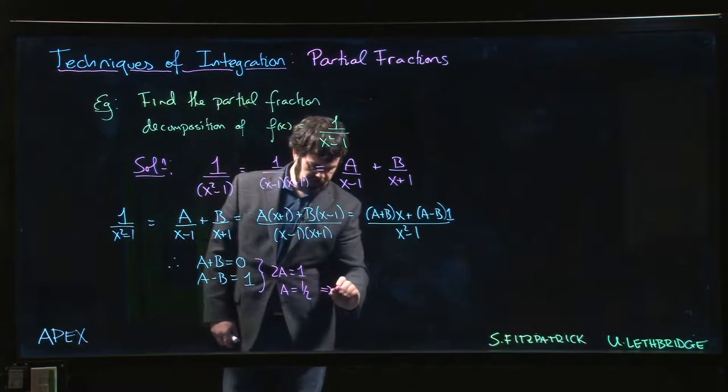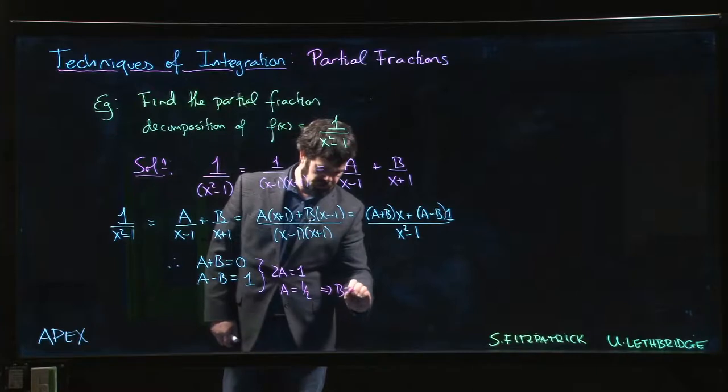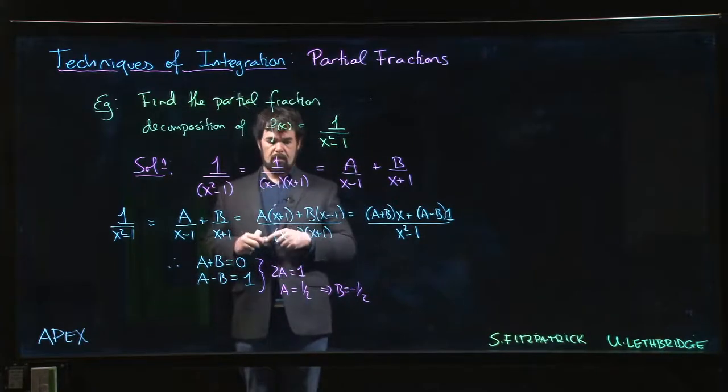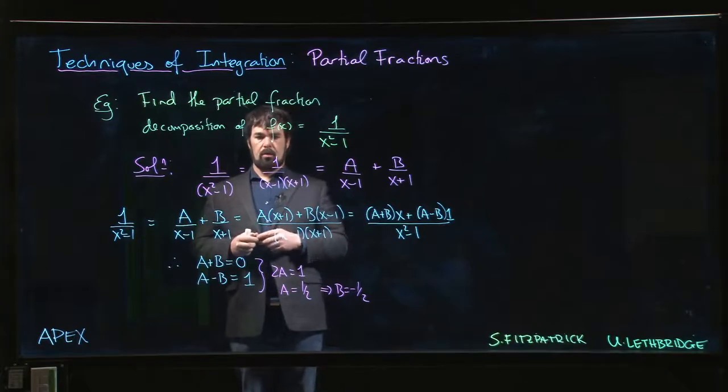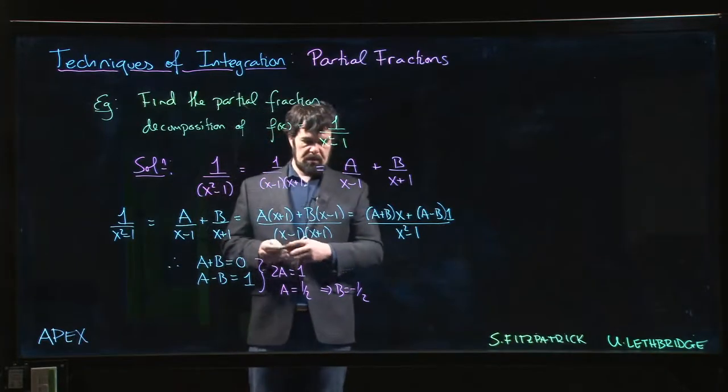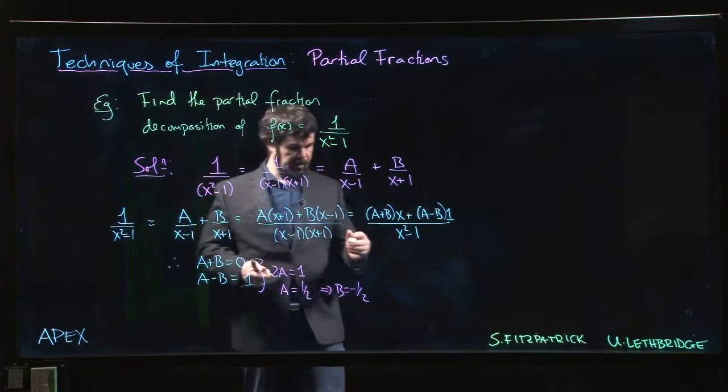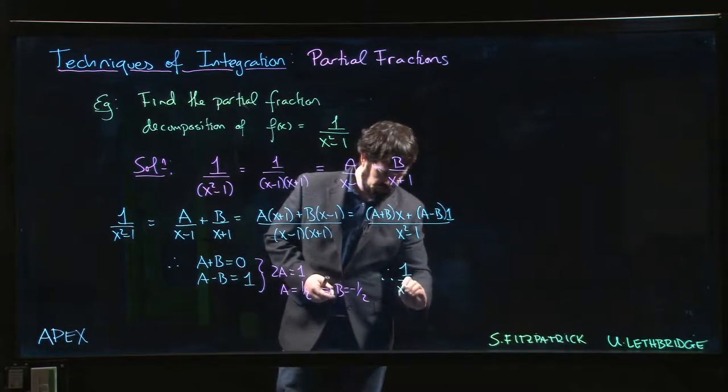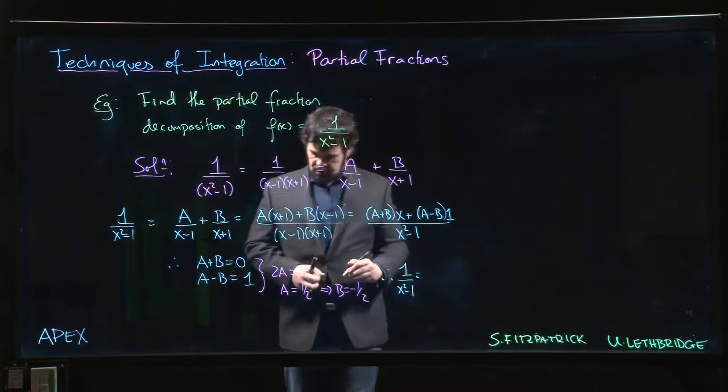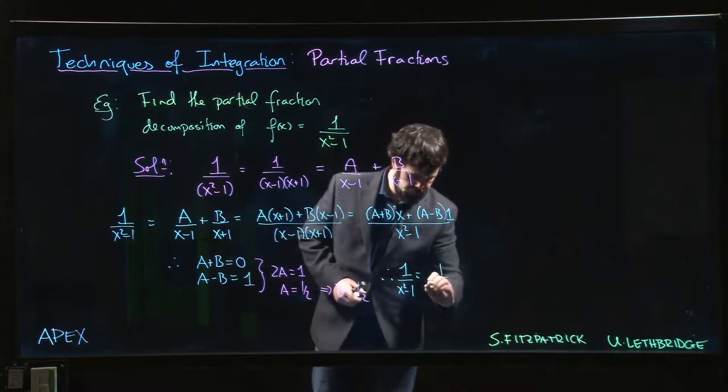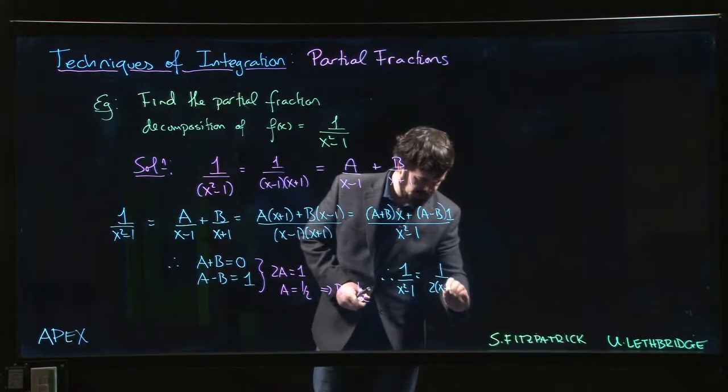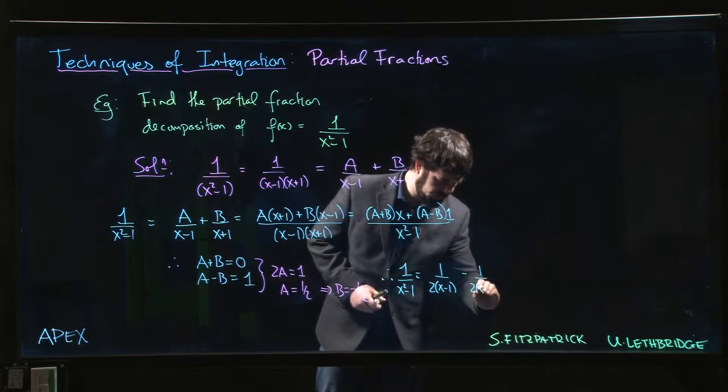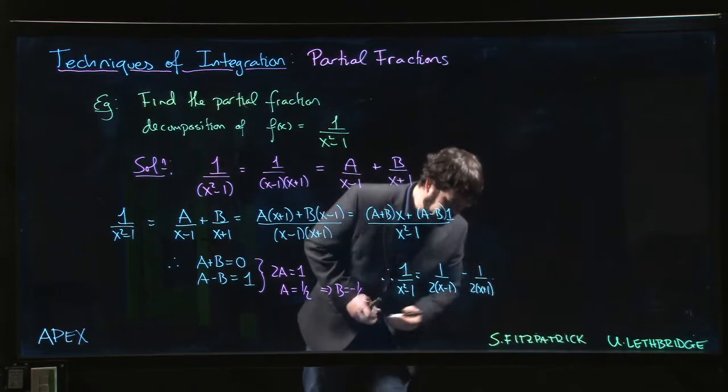And A plus B equals 0, so B is opposite sign, so B must be minus 1 half. Okay, and then you're done. So the final answer is that 1 over x squared minus 1 is equal to 1 over 2 times x minus 1 minus 1 over 2 times x plus 1.